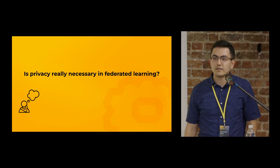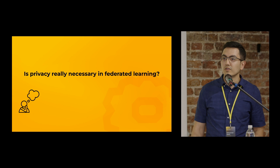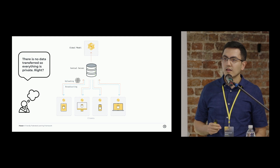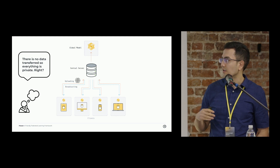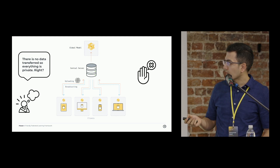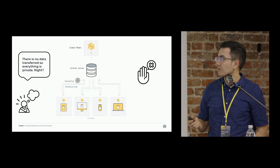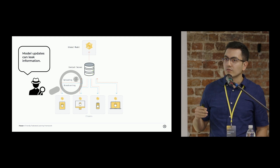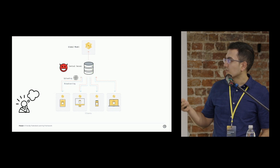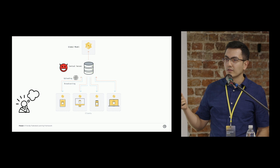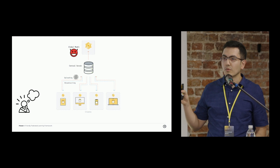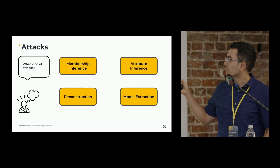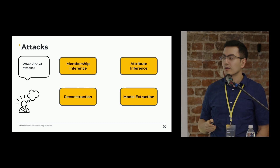So the question is: is privacy really necessary in federated learning or not? Because in federated learning there is no direct access to the data, and the data is also not being exchanged between the clients and the server. So it looks like everything should be fine, but that's not true. The model updates that are being exchanged between the clients and the server can be the root cause of different privacy attacks. An adversary can observe the model updates from the clients, or it can only monitor the output model to perform different kinds of privacy attacks like membership, attribute inference, reconstruction, or model extraction attacks.